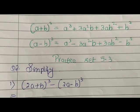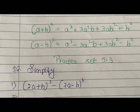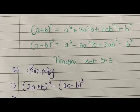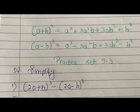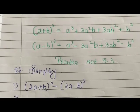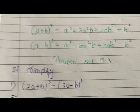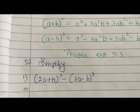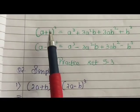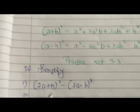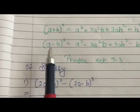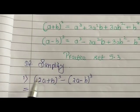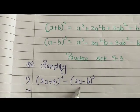Here I will be solving practice set 5.3, question number 2. The link for question number 1 and the links for practice set 5.1 and 5.2 are given in the description below. In order to solve these questions, you are supposed to use the previous expansion formula — that is (a+b)³, and since one of them is in that form, you will also use (a-b)³. Using these expansion formulas we will simplify the given question.